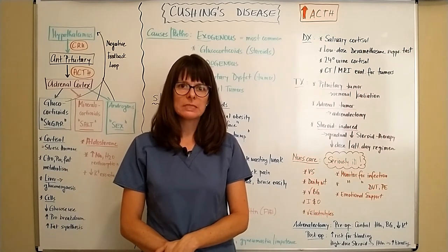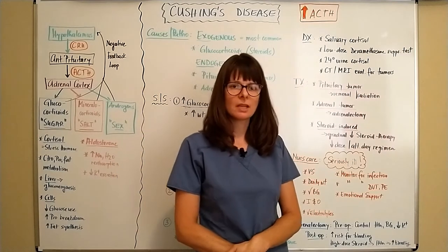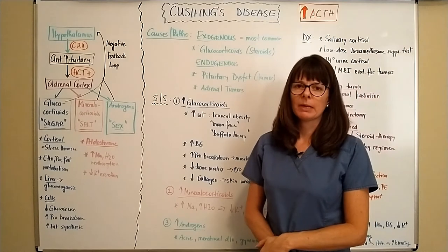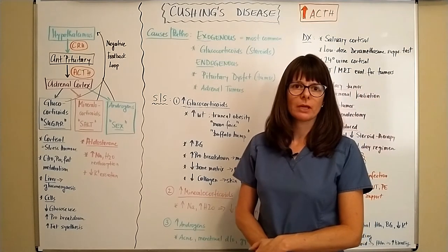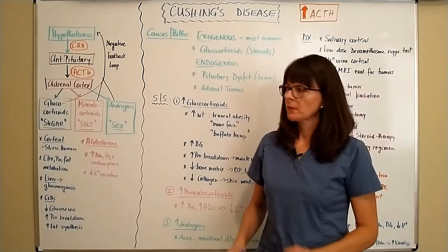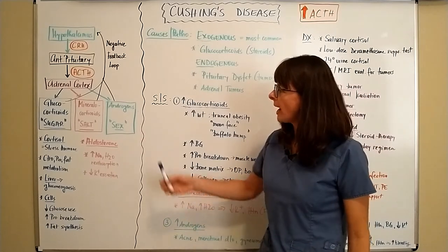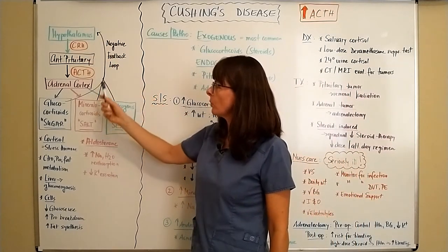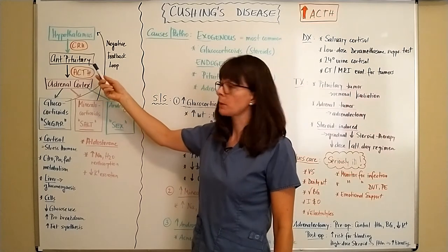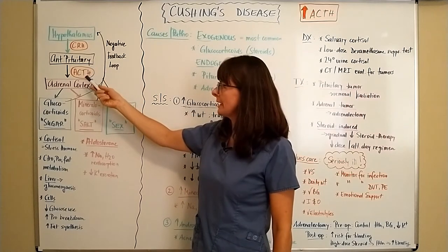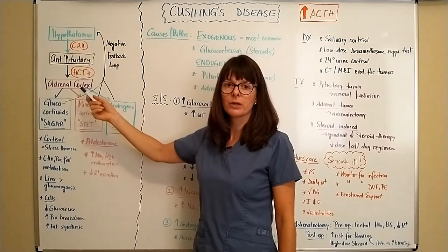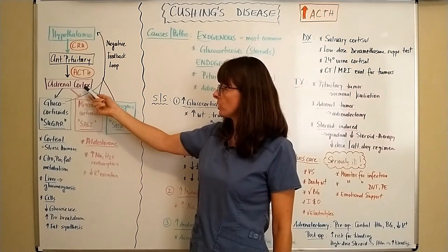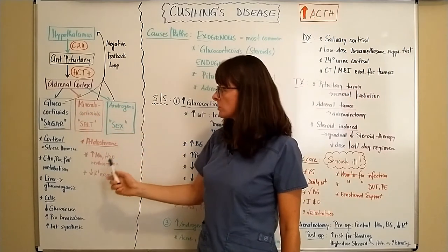Before we dive into the details about Cushing's disease, let's review how the hormones are regulated by the hypothalamic, pituitary, and adrenal axis. The hypothalamus secretes corticotropin-releasing hormone, which stimulates the anterior pituitary to secrete ACTH, or adrenocorticotropin hormone, which then stimulates the adrenocortex to release three hormones.